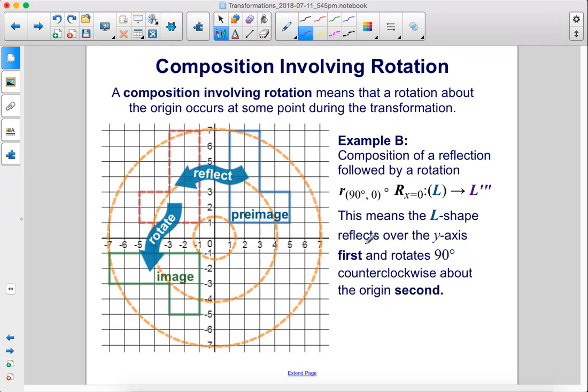This means the L shape reflects over the y-axis. We start here, reflect it over this line, goes over to this red shape, and then it rotates 90 degrees counterclockwise, and we do that second.